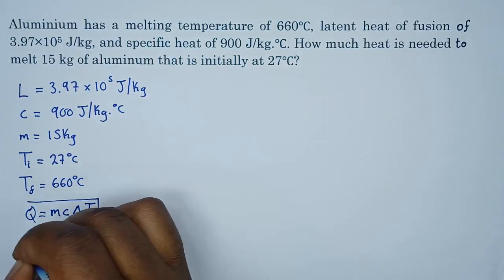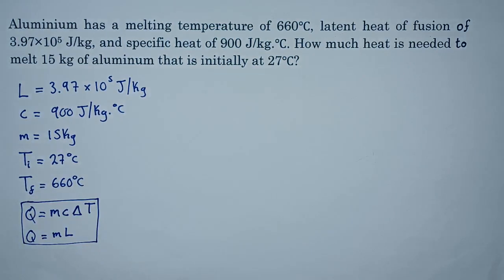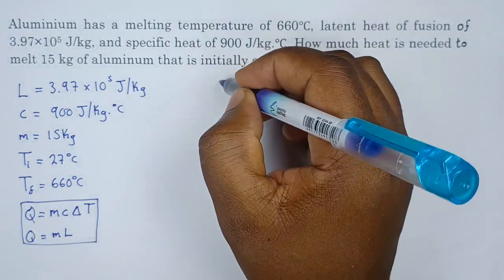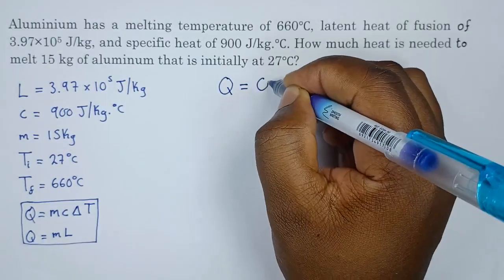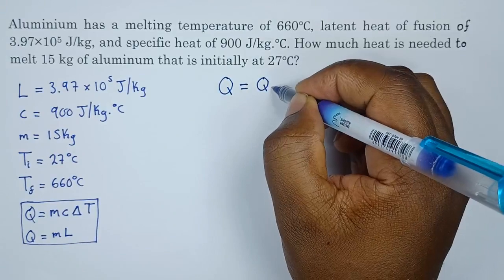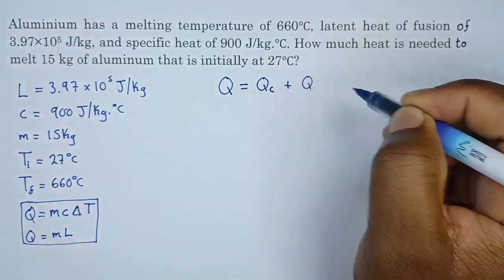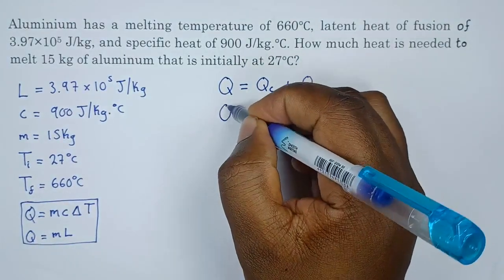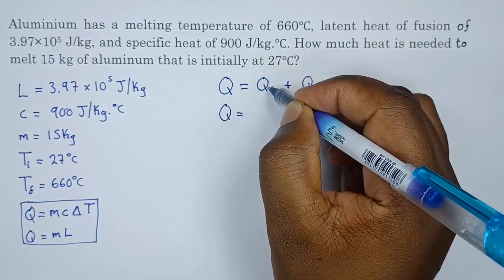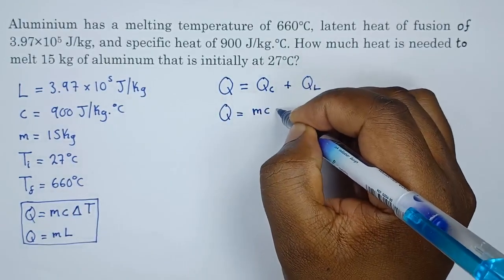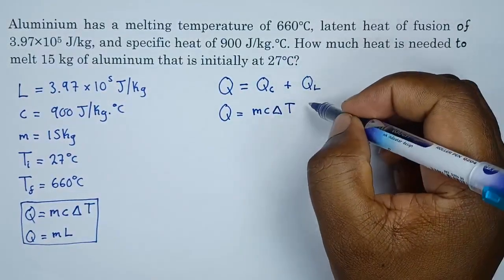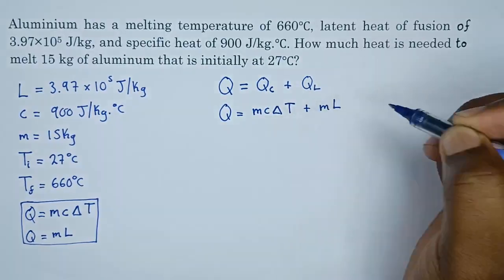So these are the two formulas we're going to use. Since we're looking at how much heat is needed for an object which has both specific heat and latent heat, we're going to combine the two. We're going to say energy will be equal to energy in terms of specific heat capacity plus the energy in terms of the latent heat. So Q equals mcΔT plus mL.